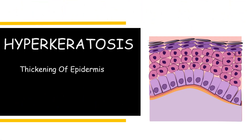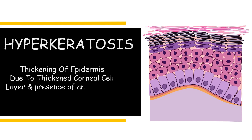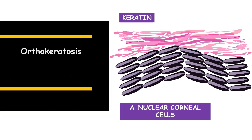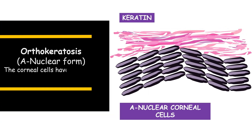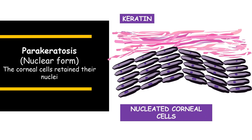Hyperkeratosis is thickening of the epidermis due to a thickened corneal cell layer and presence of an abnormal quantity of keratin. The first type is orthokeratosis, which is an anuclear form where the corneal cells have lost their nuclei. Parakeratosis, the second form, is the nuclear form where the corneal cells have retained their nuclei.